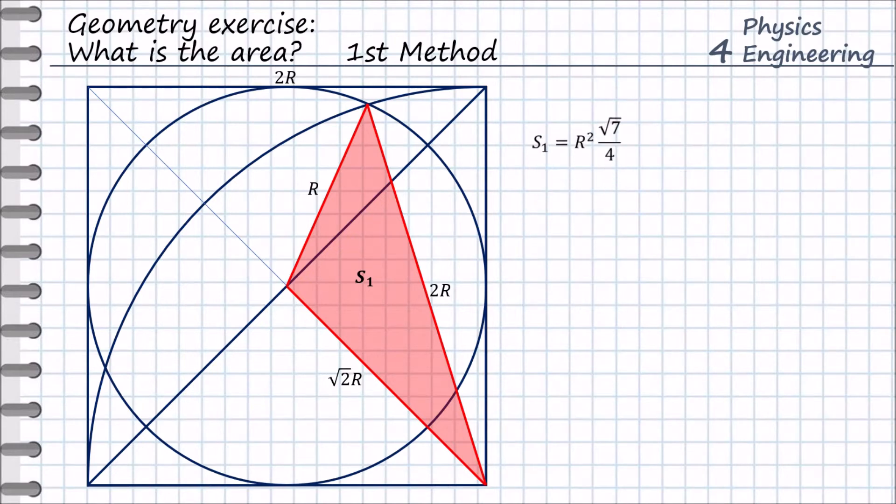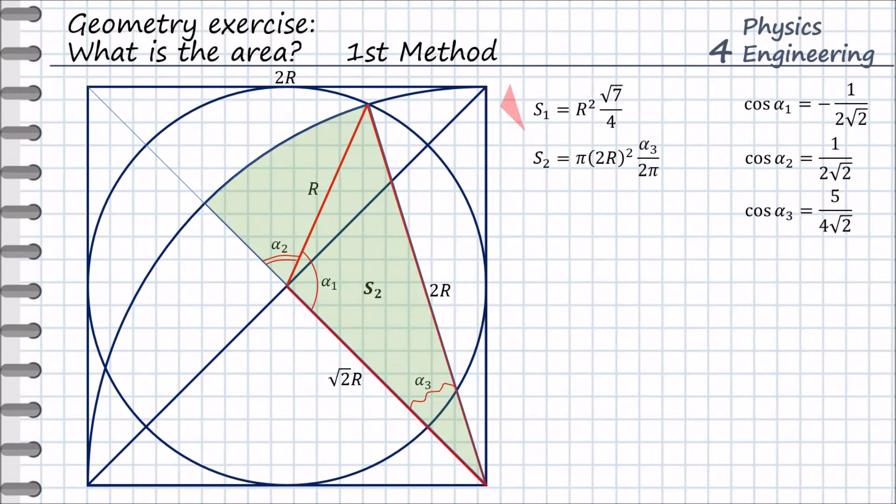As a next step we will find the following angles. We use cosine theorem for this purpose. Now we can find the area of this section. Let's call it s2. This section is part of the big circle with radius 2r. We already found angle alpha3. Therefore we can use this angle to find s2 area.